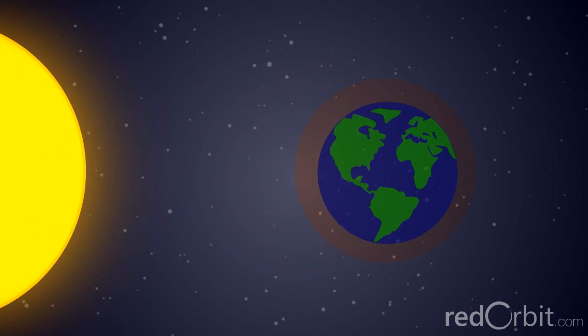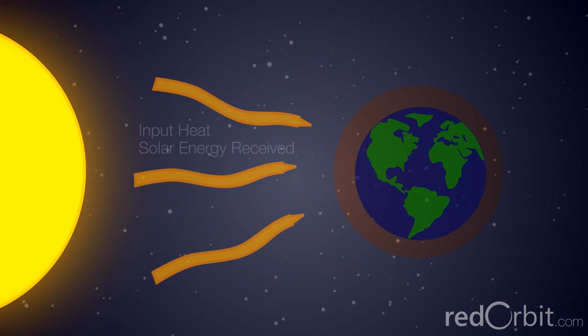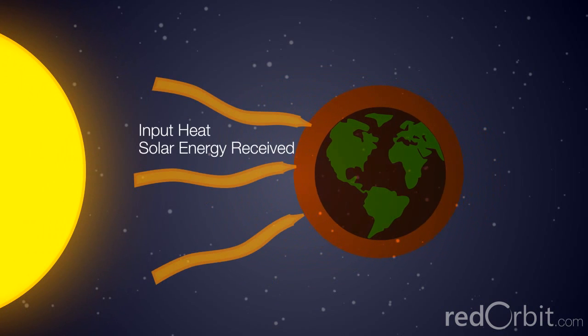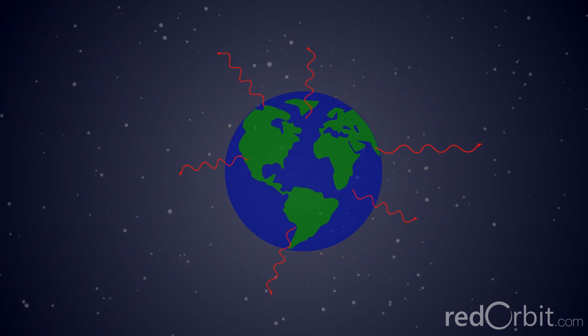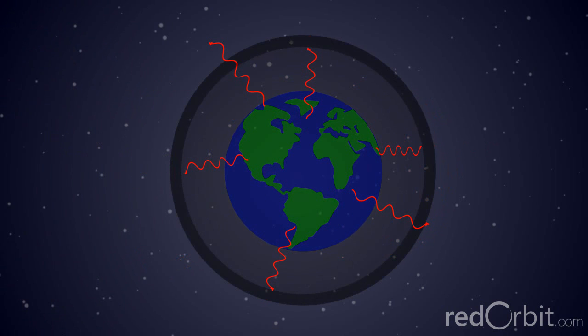The input heat, the solar energy received, is a function of solar activity and oscillations and characteristics of the Earth's orbit. The quantity of exhaust heat, terrestrial radiation, is largely a function of the presence of certain gases in the atmosphere that absorb outgoing infrared radiation.